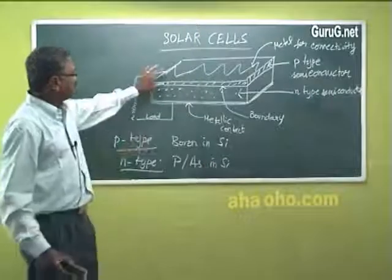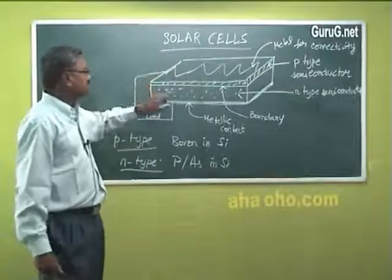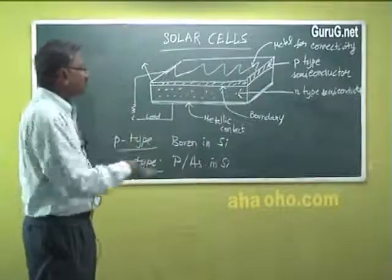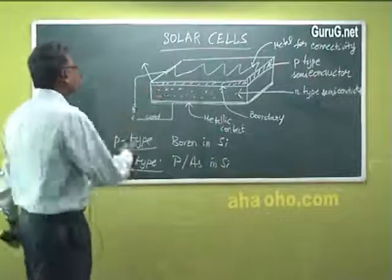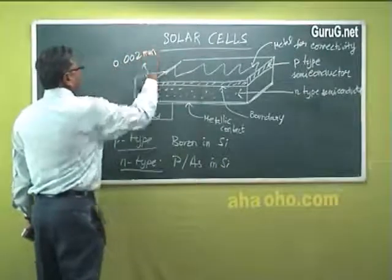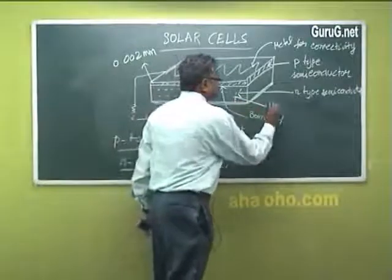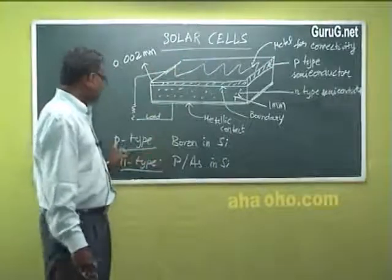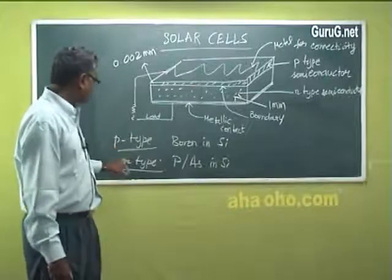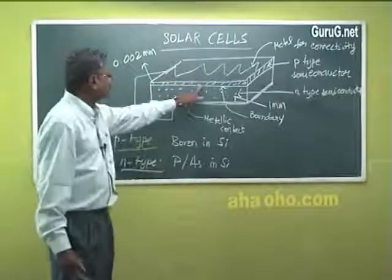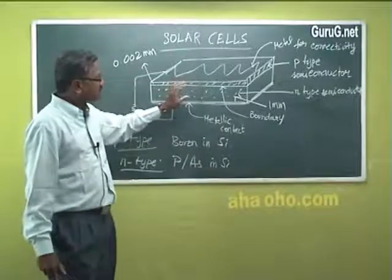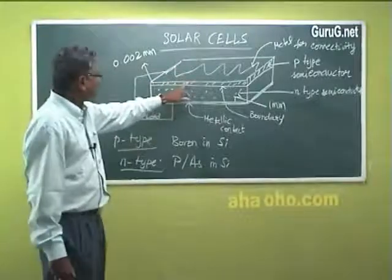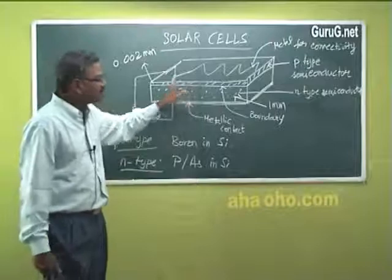In solar cell we have a wafer like arrangement, a sandwich-like arrangement. Here the wafer like P type conductor is pasted over an N type conductor. Thickness of a P type conductor is approximately 0.02 mm and this is 1 mm. When these two conductors are in contact, positive holes from the P type conductor and electrons from the N type conductor cross boundary. This is the boundary they can simply cross.